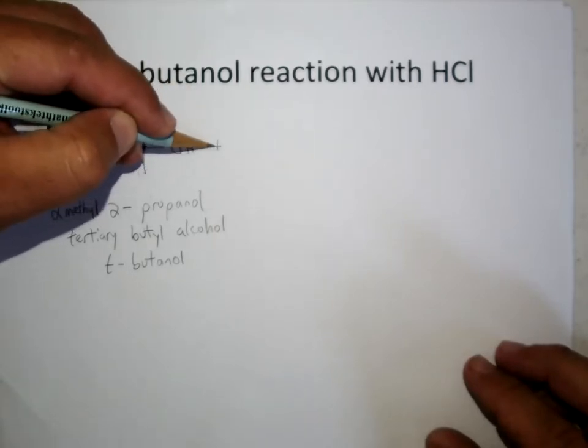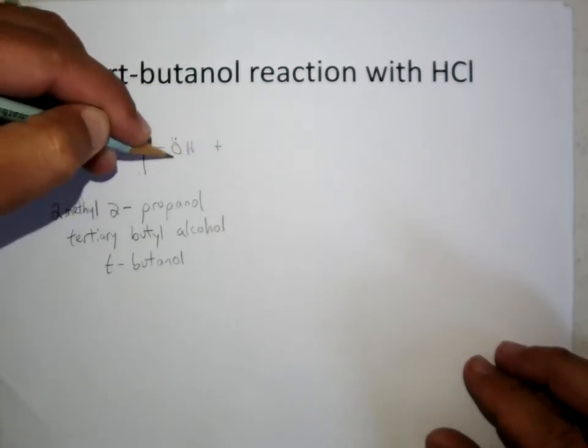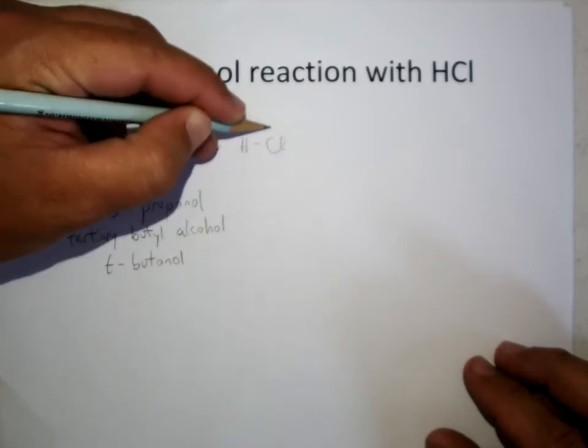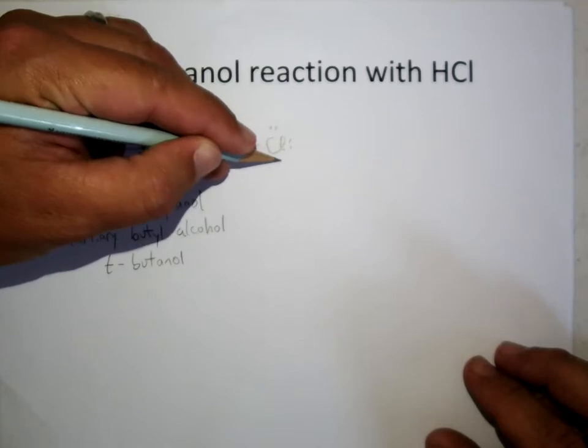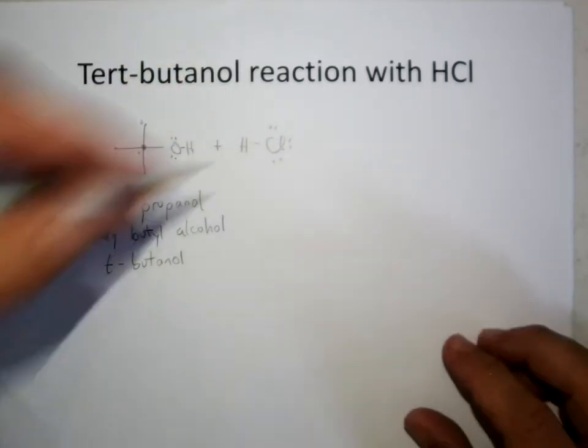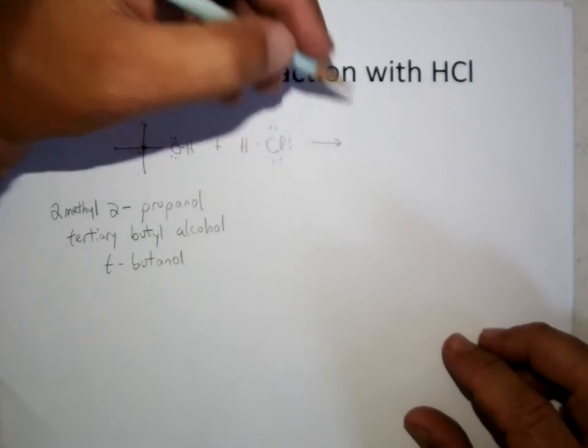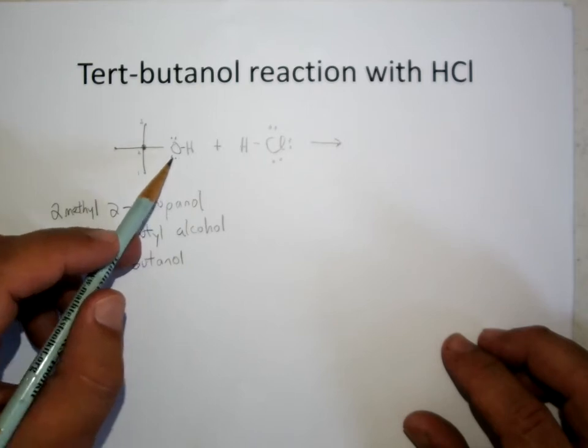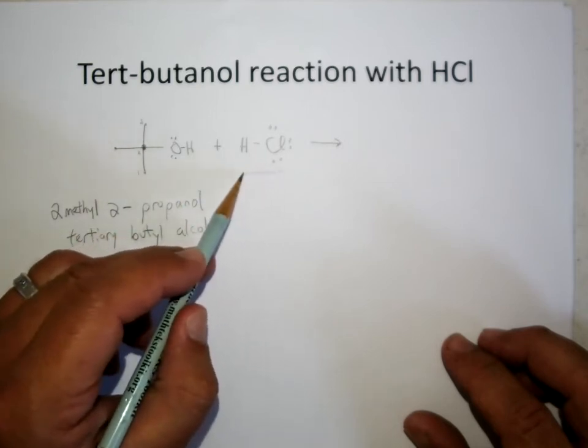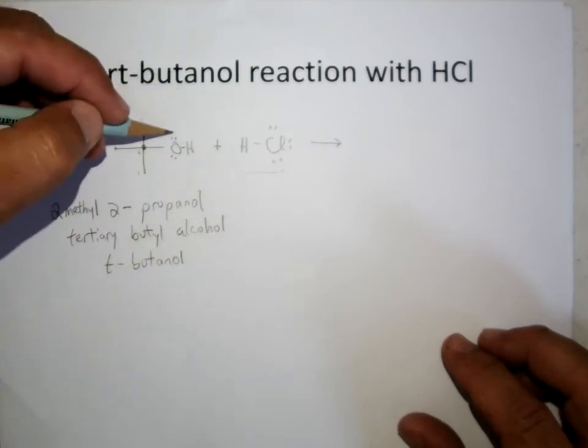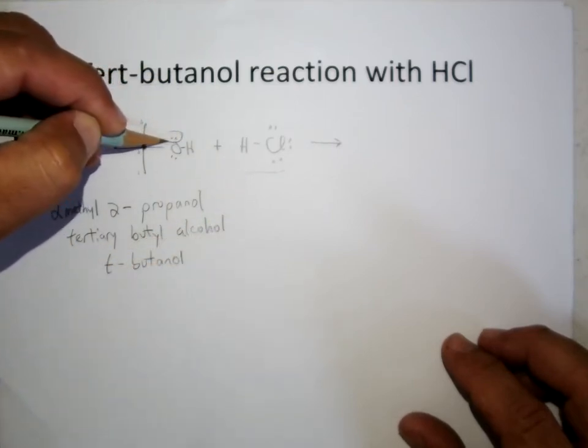And when this reacts, the tert-butanol with hydrochloric acid or any other hydrohalic acid, so you can have HCl, HBr, HI, any of those, that's again the nice thing about these reactions is they can be generalized such that if you have an alcohol and it meets any really strong acid, it's going to be protonated.